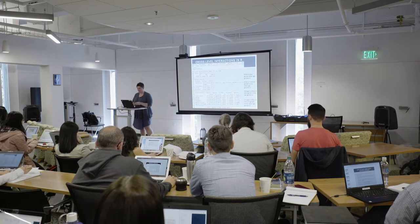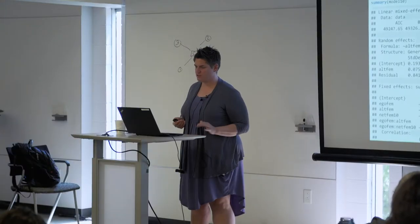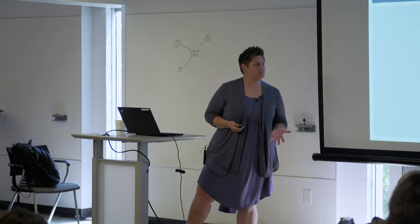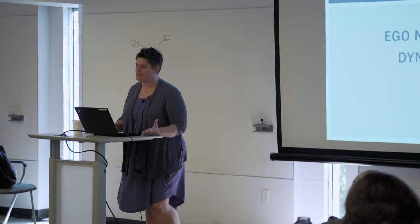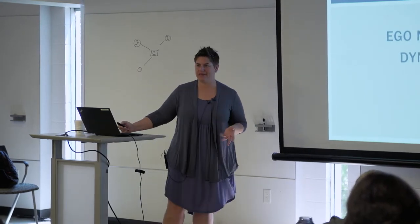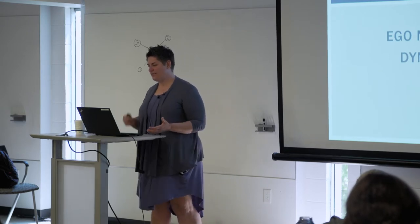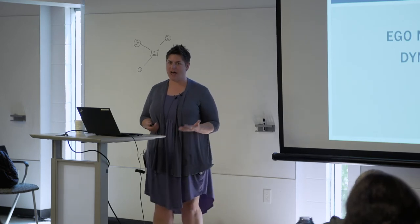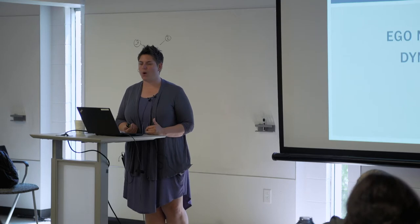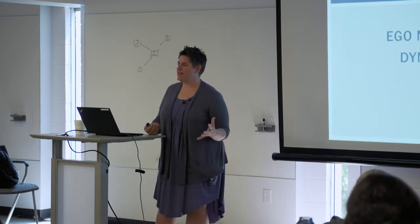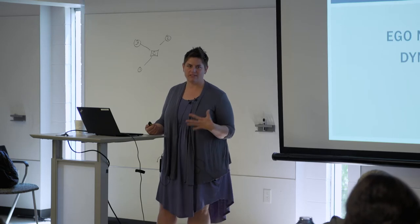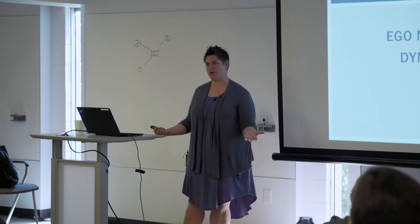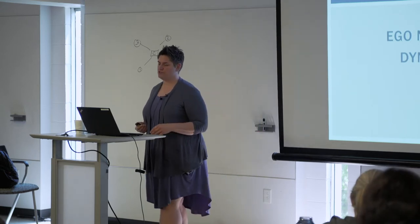Let's talk about network dynamics — we have about 30 minutes left. Ego network dynamics is kind of my jam; I'm really interested in how to measure it appropriately. Ego networks are super dynamic — they change a lot, even over short periods of time. Is change due to external events, internal changes in dyads, things happening in ego's life, or is it due to measurement? All these things are super important to keep in mind when you want to measure dynamics.